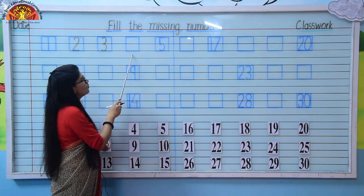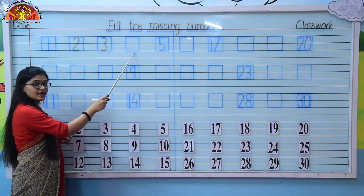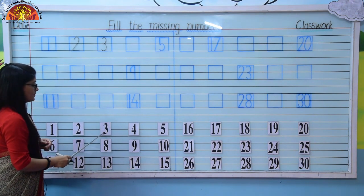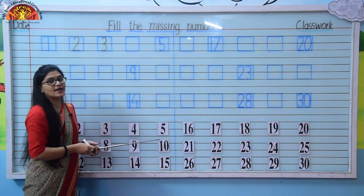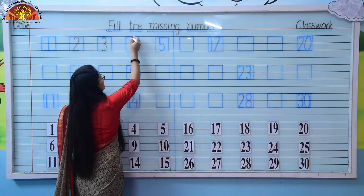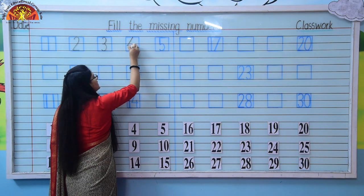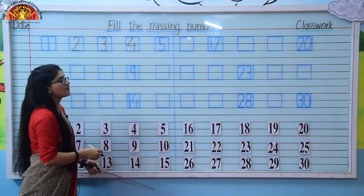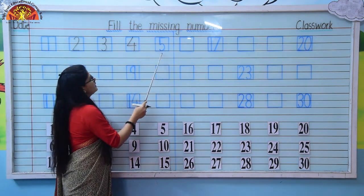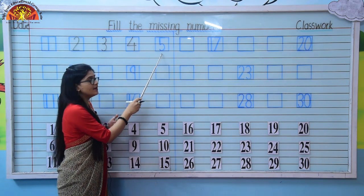Now again, one number is missing. So which number comes after 3? After 3 it's 4. So here we will write number 4. Touch the block properly and write number 4. Next number is number 5 — it's already written over here.